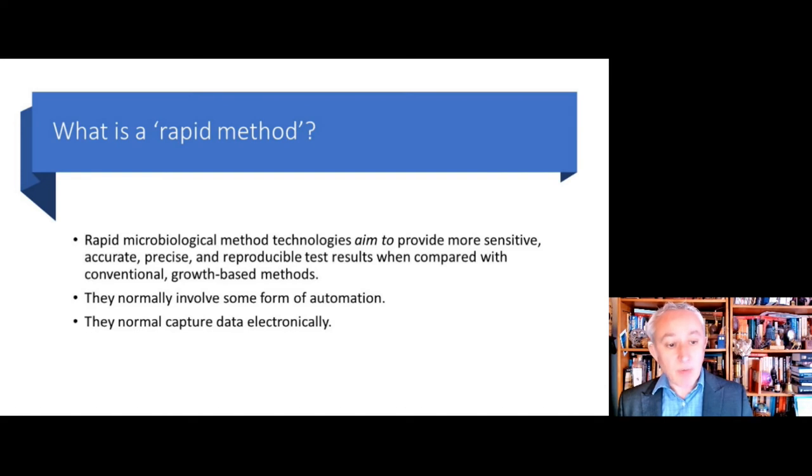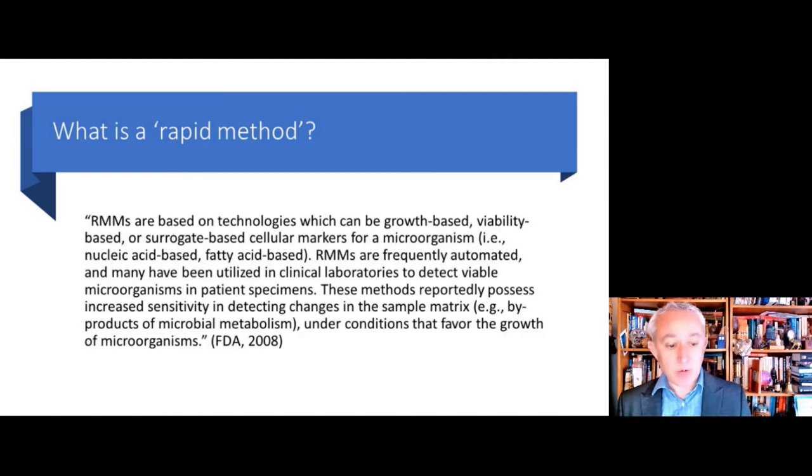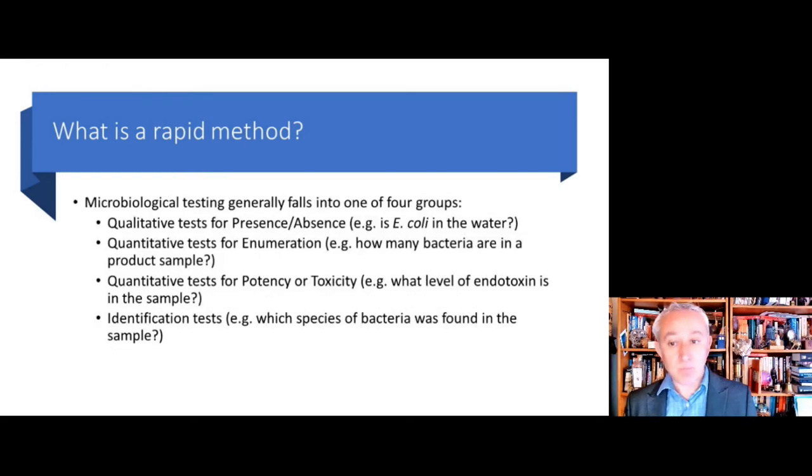Okay, so that's environmental monitoring. Let's have a look at rapid methods and then how rapid methods can help environmental monitoring. Rapid microbiological methods have been spoken about for many years. What do we mean by a rapid microbiological method? Well, it's something that aims to be more sensitive, accurate, precise, and reproducible. This is in comparison with the conventional growth-based method. Because they are modern, these are often automated and will ordinarily capture data electronically or digitally for further analysis. We can look at this quotation from the FDA guidance for industry for the validation of growth-based rapid microbiological methods. Some key words there are different technologies: growth-based, viability-based, cellular markers, automated, and providing something that is better, having increased sensitivity.